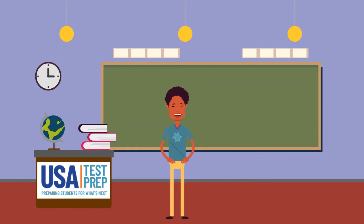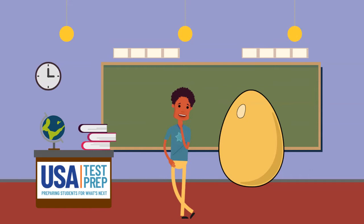Many animals are born and they look just like their mother, only smaller. An elephant is an example of this. Some animals are born inside an egg and they hatch. Think of an animal that is born inside an egg.